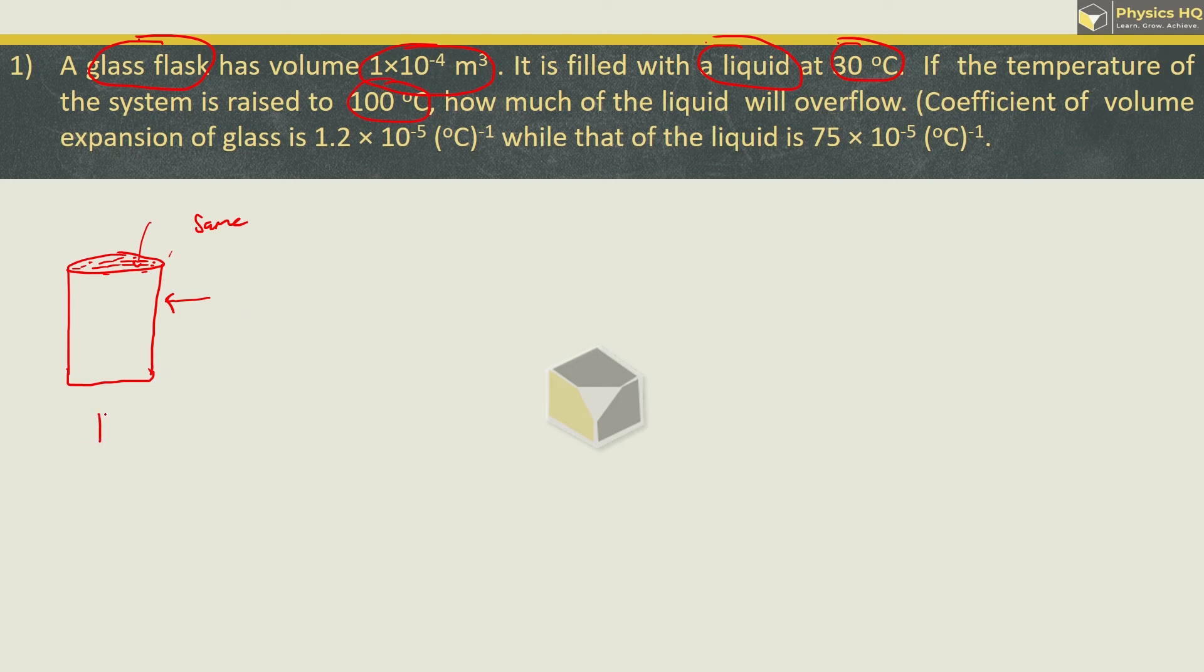Now, when we heat it, what is going to happen is this vessel's volume will increase and the liquid's volume will increase. So first of all, when we heat, how much will the volume increase? We all know that gamma, coefficient of volume expansion, is given by V2 minus V1 upon V1 times T2 minus T1.